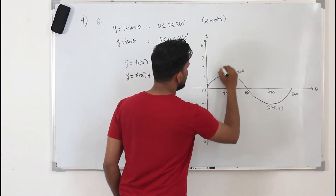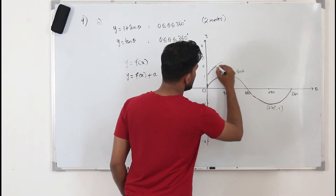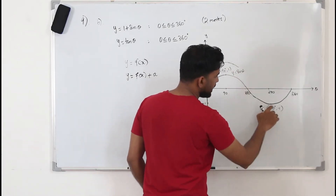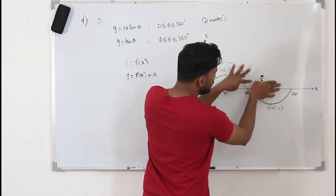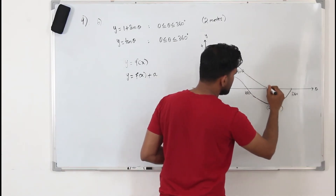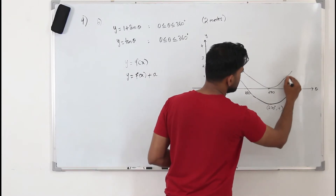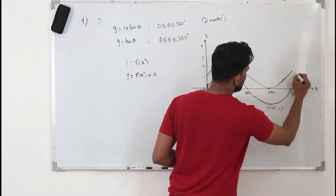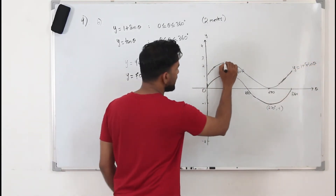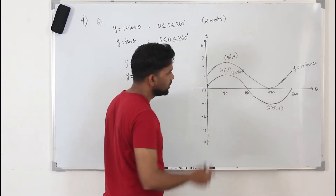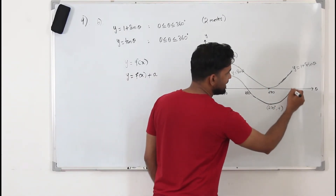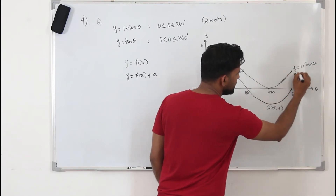Instead of starting at (0, 0), the curve starts at (0, 1). The maximum point becomes 2, so the maximum is at (90°, 2). The minimum point, which was -1, moves up 1 unit to 0, giving a minimum at (270°, 0). The end point, instead of (360°, 0), is now at (360°, 1). This is the transformed graph of y = 1 + sinθ.